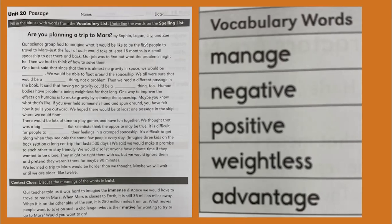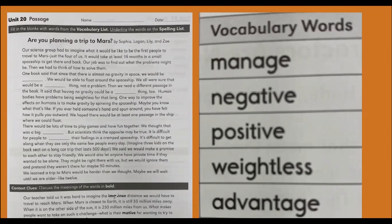So the bold words in the passage, immense and motive. If you do not know what those words mean, you're going to use your context clues to find it. So our teacher told us it was hard to imagine the immense distance we would have to travel to Mars. I think it would mean something like maybe being hard to do, really far away. Think about it, what do you think immense would mean?